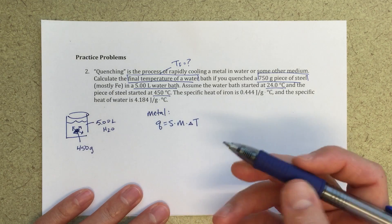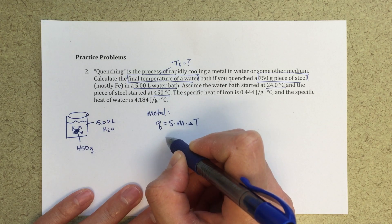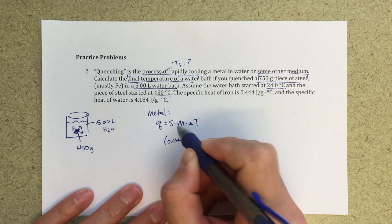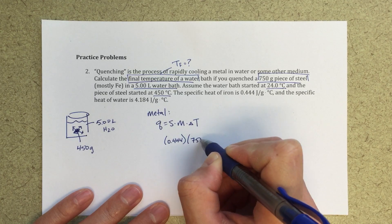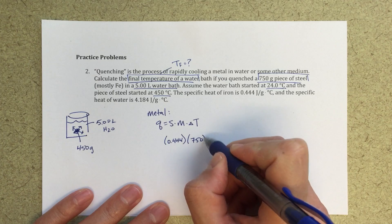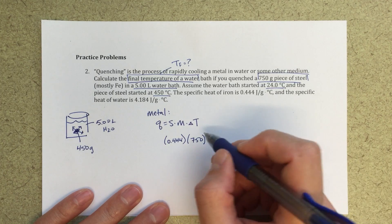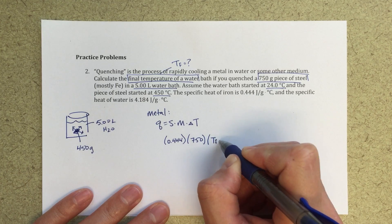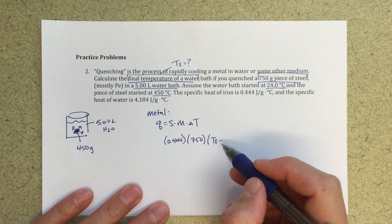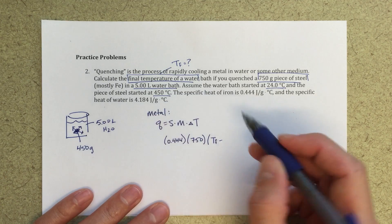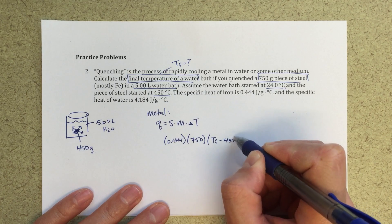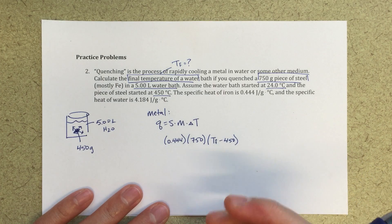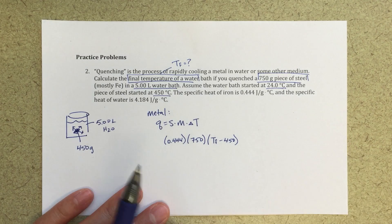Alright, so if I wanted to calculate that, that would equal 0.444 times my mass, 750 grams times my delta t. So my delta t here, we don't know what t final is, right? So we don't know t final, that's what we're looking for, minus t initial, so the t initial is going to be 450 degrees Celsius. So this calculation here is going to tell me essentially how much energy was transferred away from the metal.